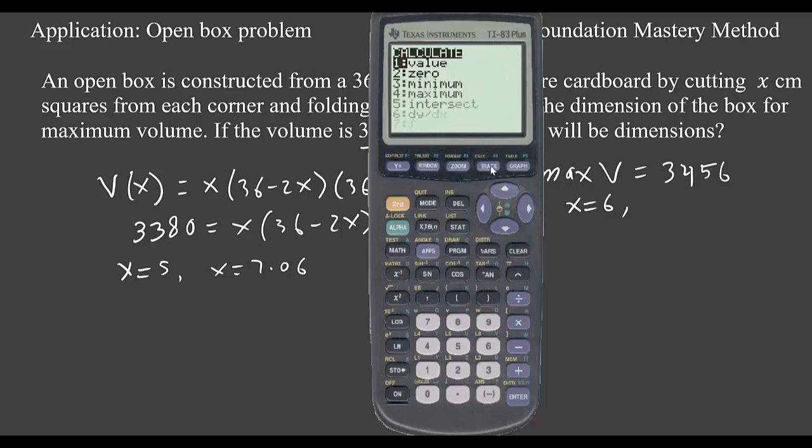Second, trace, 5 is intersection. Let's move there and see what happens. Enter. That gives you 23.94. So if you plug in 23.94, 36 minus 2x is more than 36, so it will give me a negative answer. So that's why we don't take that one. Thank you.